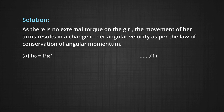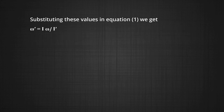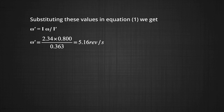This gives us equation one: I equals 2.34 kg·m² and omega equals 0.8 revolutions per second. I-dash is 0.363 kg·m². On substituting the values in equation one we get omega-dash equals I into omega upon I-dash. Therefore omega-dash becomes 2.34 into 0.8 divided by 0.363, which on calculating gives 5.16 revolutions per second.